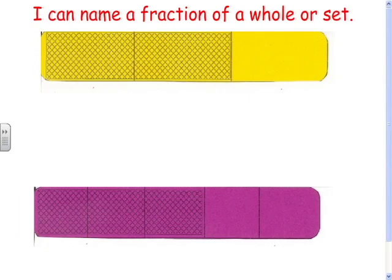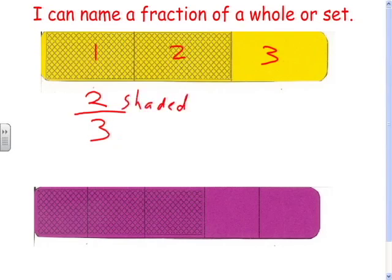So let's look at this top picture. We've divided this into three equal pieces, and two of them are shaded. So to write that as a fraction, we have two-thirds. The top number is the number shaded, and the bottom number is the total number of pieces.